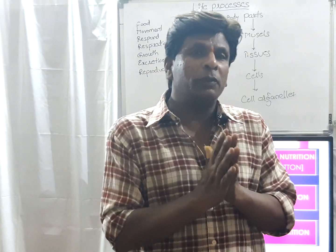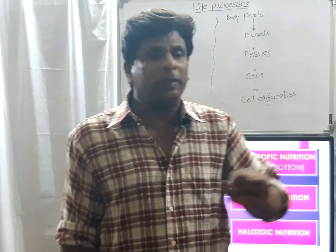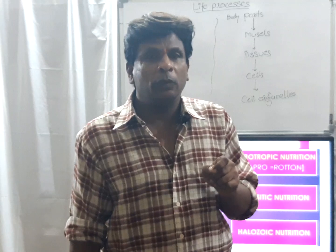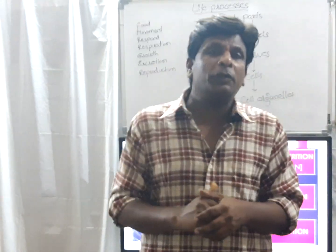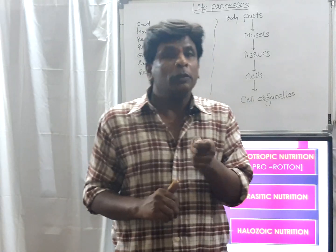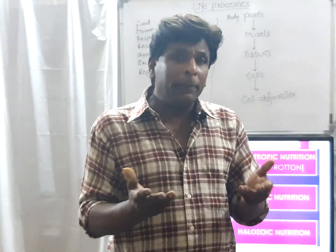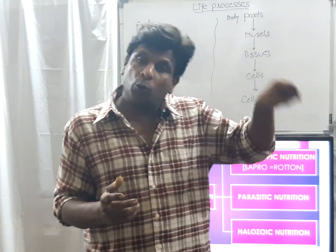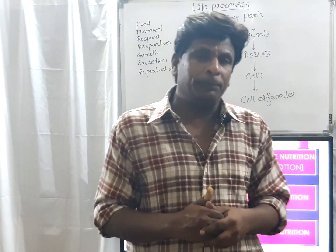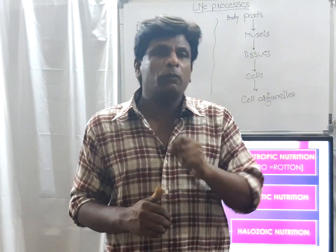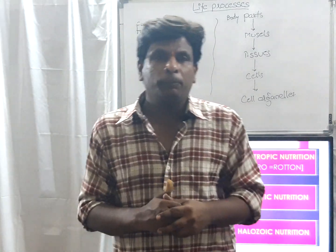In nutrition we studied two types: autotrophic and heterotrophic. In autotrophic nutrition, organisms prepare their food themselves — 'auto' means self. In heterotrophic nutrition, the organisms depend on other organisms for their food; those other organisms may be autotrophic or heterotrophic. Heterotrophic organisms always depend on other organisms for food, while self-preparing food organisms are autotrophic.